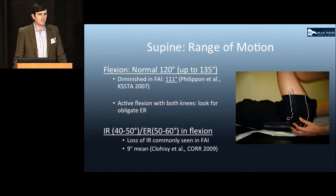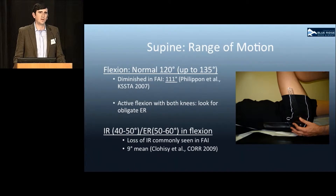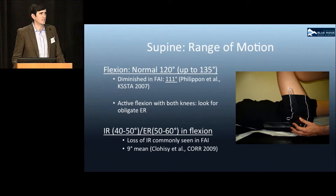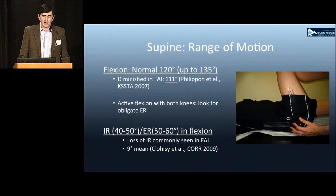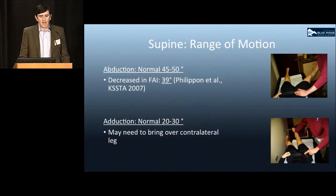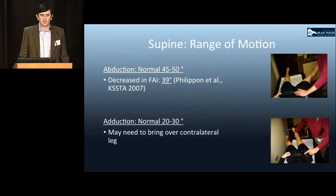Range of motion in the supine position consists of flexion, which is normally about 120 degrees and has been shown to be diminished in FAI. I'll also have the patient perform active flexion of both legs looking for obligate external rotation. Passive internal and external rotation can be performed as well — normally 40 to 50 degrees for IR and 50 to 60 for ER. Loss of IR is most commonly seen in FAI, as proven by multiple authors.